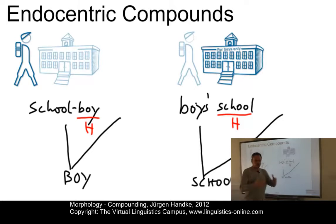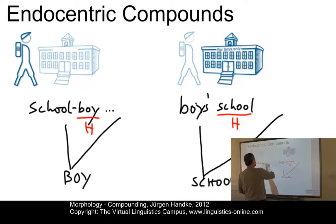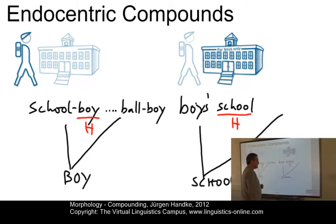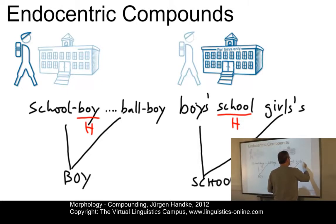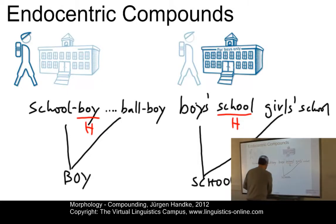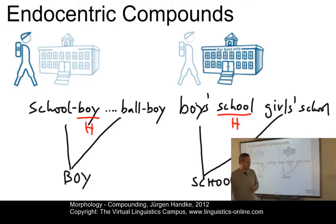In other words, a schoolboy is a special type of boy — for example, other types would be 'ball boy'. And a boy's school is a type of school — other types would be something like 'girls' school'. This is then a typical endocentric compound.